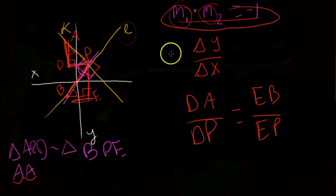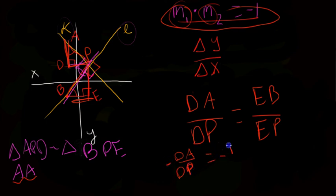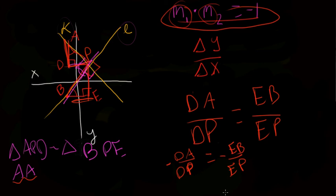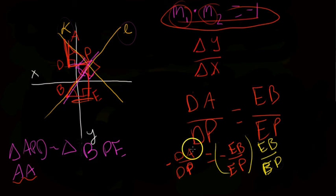We want to prove M1 times M2 equals negative 1. So we multiply both sides by negative 1, giving us negative DA over DP equals negative EB over EP — they're still equivalent. Then we multiply both sides by EB over EP (not negative EB over EP, because we want the negative 1 on this side), giving us negative DA over DP multiplied by EB over EP.